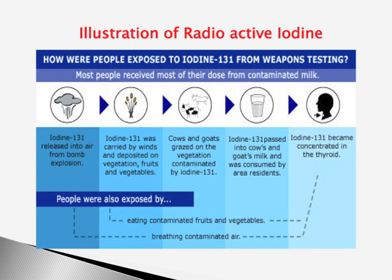Iodine-131 — the general iodine used for medical purposes — becomes very lethal and dangerous when it turns into an isotope. It goes into the atmosphere, into plants, into animals, into milk, and then into the human body. It causes thyroid problems and various carcinogenic effects from the consumption of this radioactive iodine.